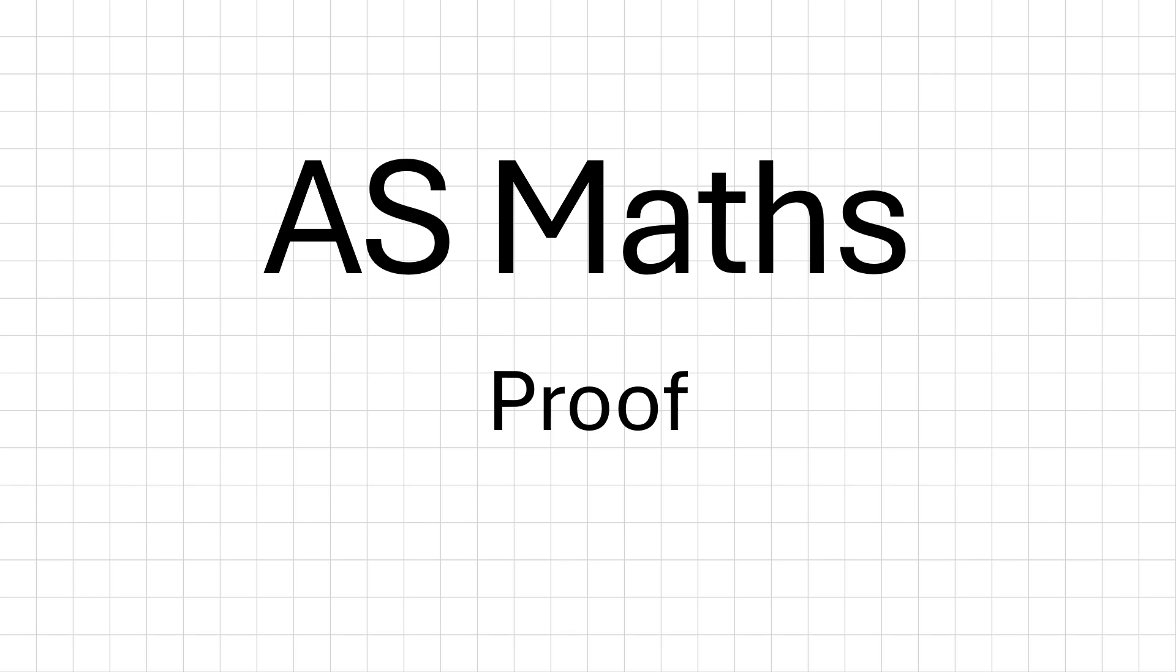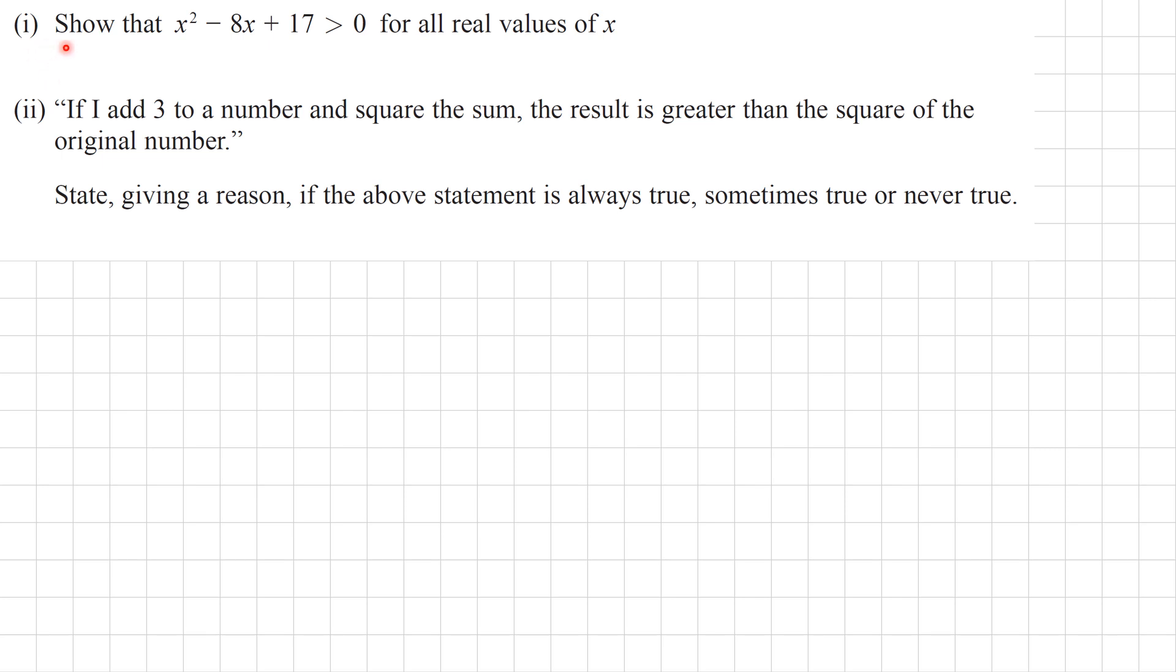Okay, we're going to have a go at an AS Maths proof question. Let's have a look at this first part. Show that x squared minus 8x plus 17 is greater than 0 for all real values of x.